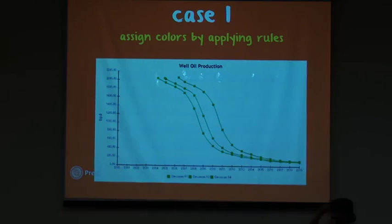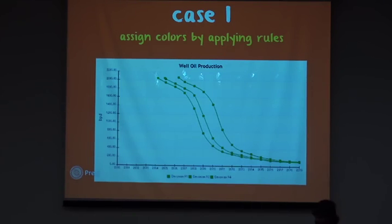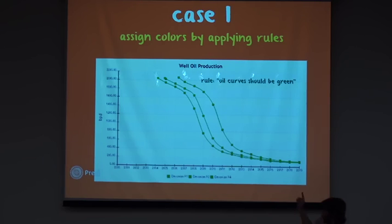The first problem is if we try to follow semantic logic to assign colors, because colors usually have meaning for the user. For instance, in the oil industry, oil curves should be green or some tone of green. The problem here is that if we follow this rule, we might end up having this confusing graph where we have three different curves for three different wells, and we cannot tell which curve corresponds to which well.